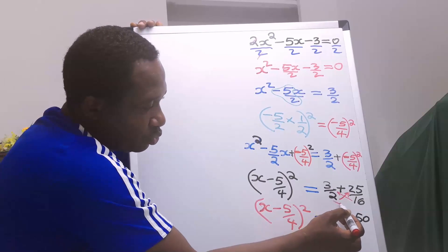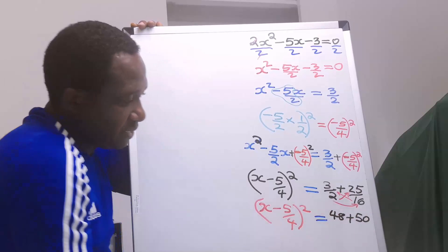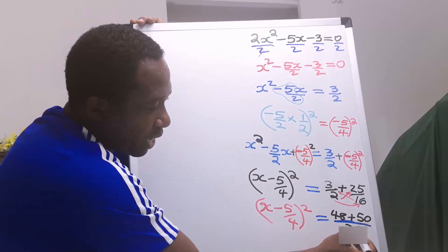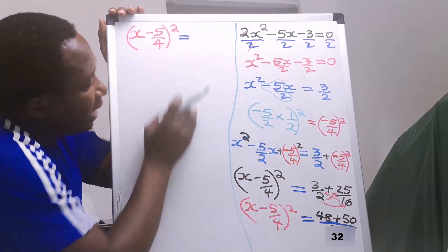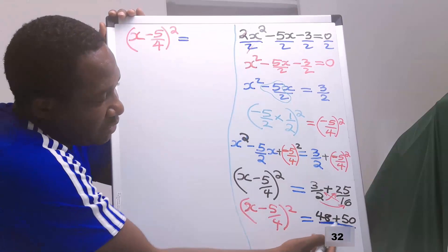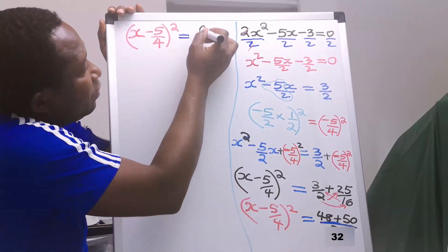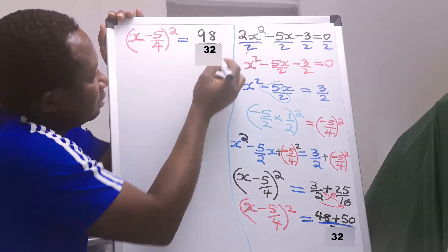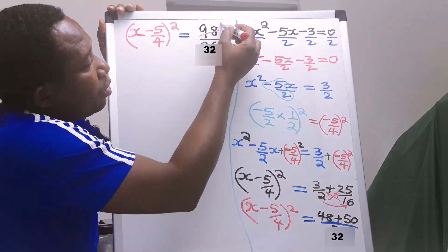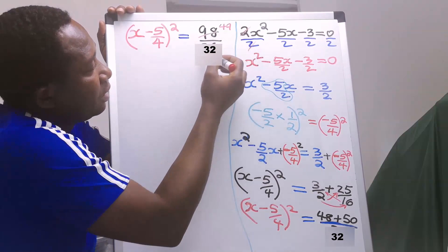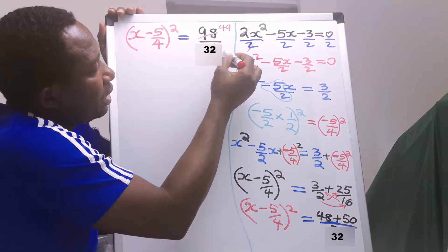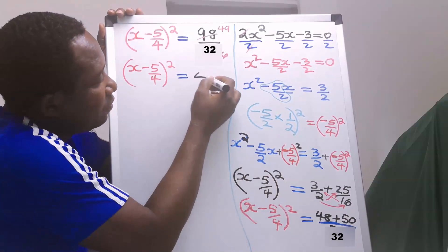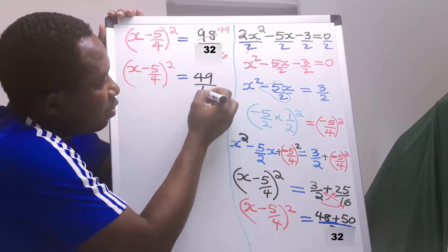Next, 2 multiplied by 16 at the denominator. 48 plus 50 gives 98 over 32. Next, 2 goes into 98 giving 49, and 2 goes into 32 giving 16. And now we are left with 49 over 16.